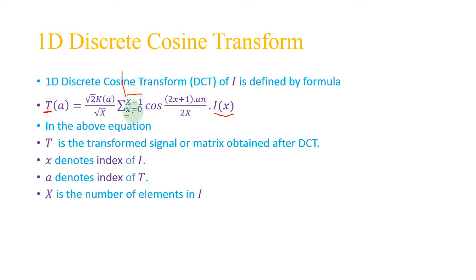In this case the size of the input signal is 3, so capital X equals 3 and X-1 equals 2, so the summation goes from 0 to 2, meaning x takes values 0, 1, and 2. Meanwhile, a denotes the index of the transformed signal — x denotes the index of the input signal and a denotes the index of the transformed signal. Index means position or location in the signal.